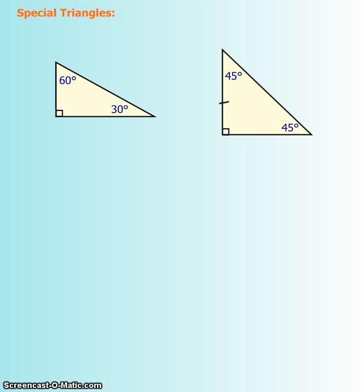In the isosceles triangle, the two legs are the same length and the two base angles are also the same. Taking away 90 degrees from 180 leaves 90 degrees, split in half, giving you 45 and 45. Setting each leg to 1, the hypotenuse is found using the Pythagorean theorem: 1 squared plus 1 squared equals 2, so c equals root 2. That's your isosceles right triangle — pretty easy to memorize.